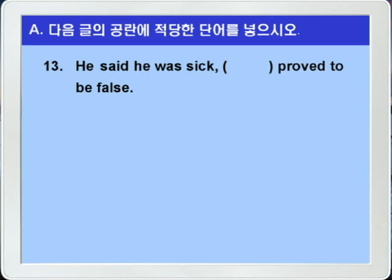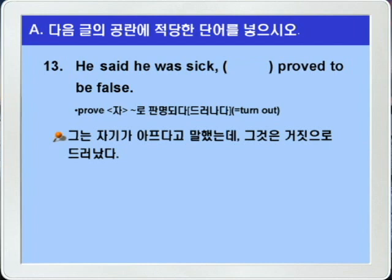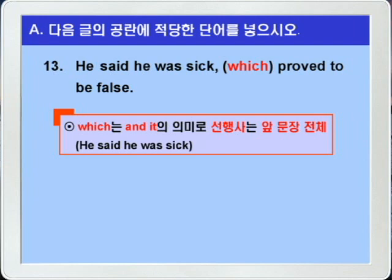13번입니다. prove는 대개 'prove to be' 이런 형태로 '~으로 판명되다, ~으로 드러나다', 그래서 turn out과 뜻이 같습니다. 'He said he was sick', 그는 자기가 아프다고 말했는데, 'blank proved to be false', 그것은 거짓으로 판명되었다. 블랭크 앞에 쉼표가 있으니까 계속적 용법으로 앞 문장 전체를 선행사로 받는 which가 정답이 되겠습니다. 여기 which는 'and it'의 의미로 쓰인 것입니다.